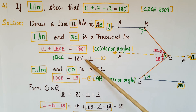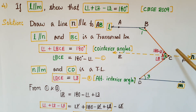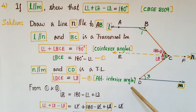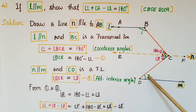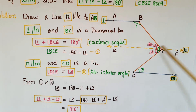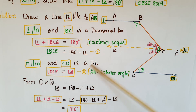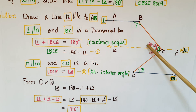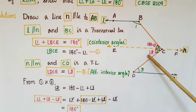Then, N is parallel to m and CD is the transversal, so these two angles are alternate interior angles — both equal to angle 3. Therefore, angle DCE = angle 3. This is equation 2, since alternate interior angles are equal. From equations 1 and 2, we can write: angle 2 = 180 − angle 1 + angle 3.